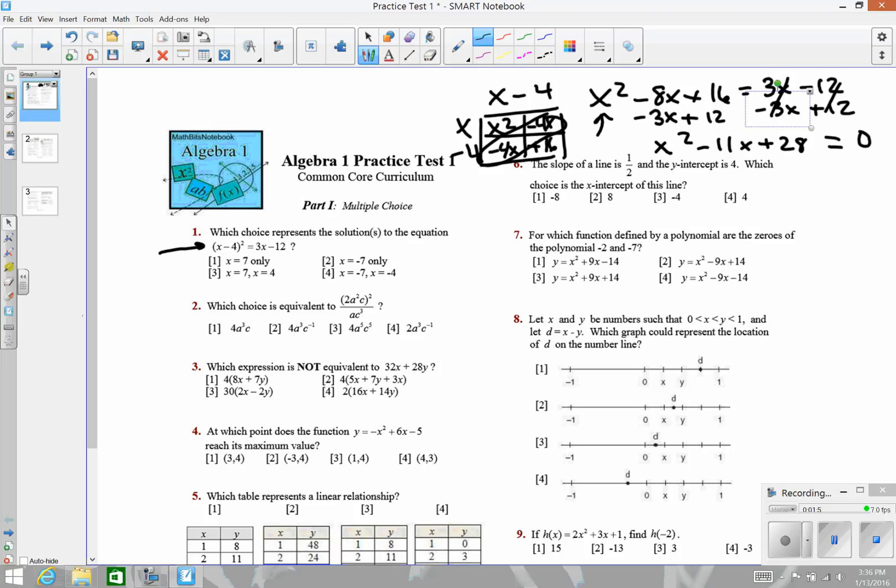It looks like I can factor that. If you remember your factoring of quadratics, I'm going to look for two numbers that add up to minus 11, multiply to 28, and those two numbers are going to be minus 7 and minus 4. Multiplying those two together gives me 28, adding them gives me negative 11.